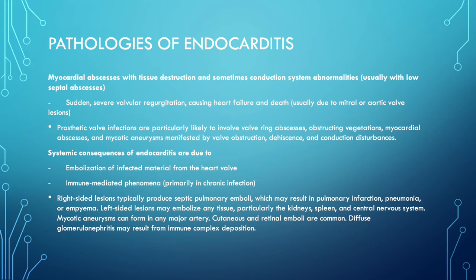Systemic consequences of endocarditis are due to embolization of infective material from the heart valve. Right-sided lesions typically produce septic pulmonary emboli, which may result in pulmonary infarctions, pneumonia, or empyema. Left-sided lesions may embolize to any tissue, particularly the kidney, spleen, and central nervous system. Mycotic aneurysms can form in any major artery. Renal and thromboemboli are common. Renal failure may result from immune complex deposition.